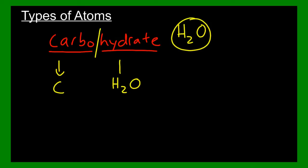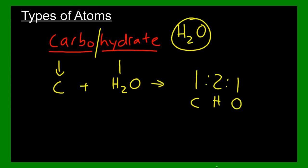Carbohydrates are compounds which have carbon and water that make them up. Most carbohydrates have a basic formula and a ratio of one to two to one — that means one carbon atom, two hydrogen atoms, and one oxygen atom in relationship to each other.